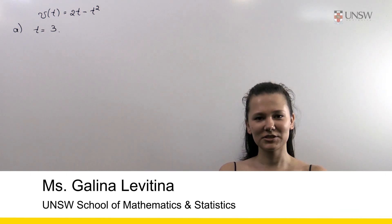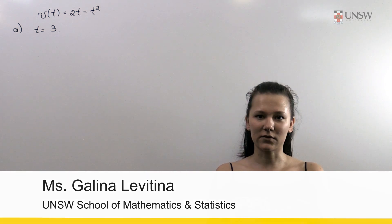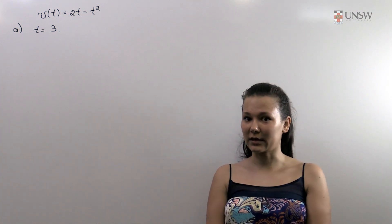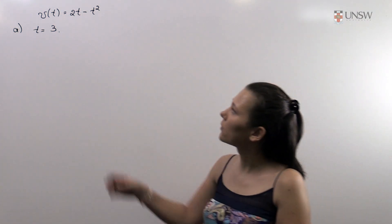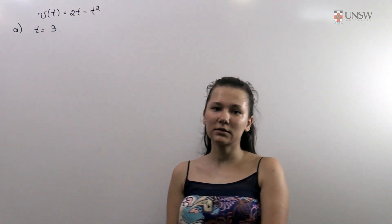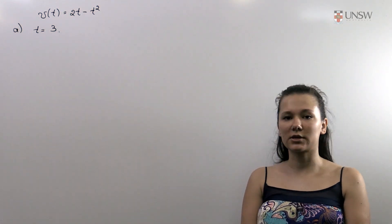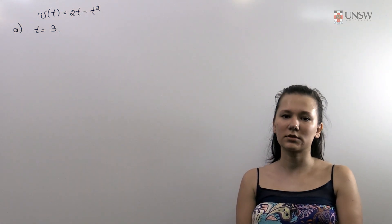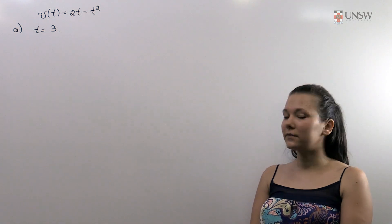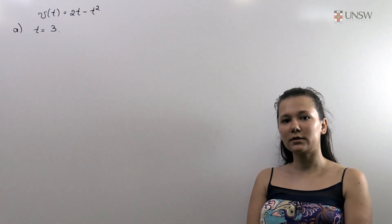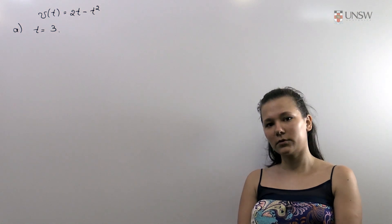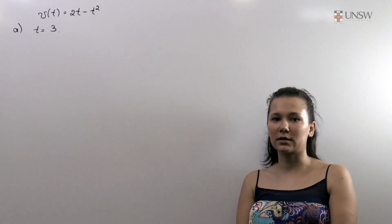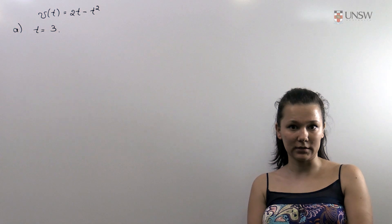Hello! In this question we are given the equation of velocity of a particle moving along the x-axis. This equation is given by 2t minus t squared, where t represents time and is of course a positive number. In the first part of this question we need to find the distance between the starting point and the point where the particle is at the moment when t equals 3 seconds.